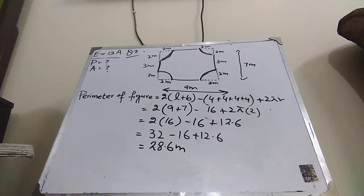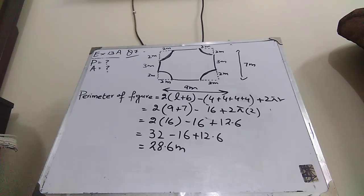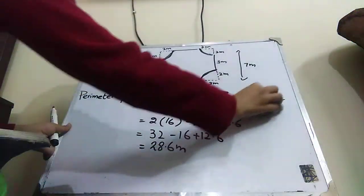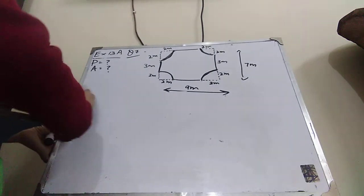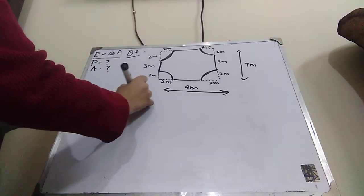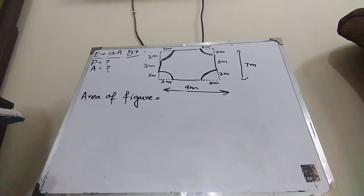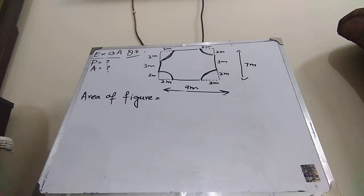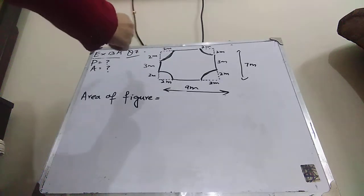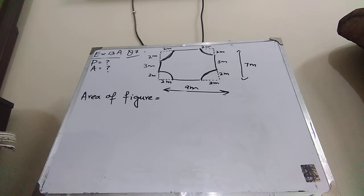We have found the perimeter of the figure. Now I will explain how to find the area of the figure. In the area, perimeter is the outer boundary, but area is the space inside. We have to find this space. We can find it by taking the area of the whole rectangle and subtracting the area of the four quadrants, which together form one complete circle.